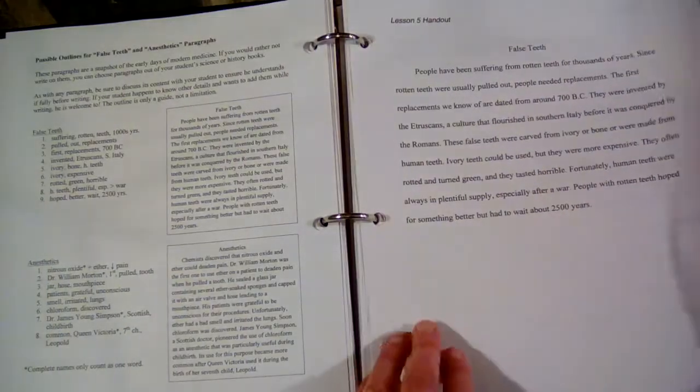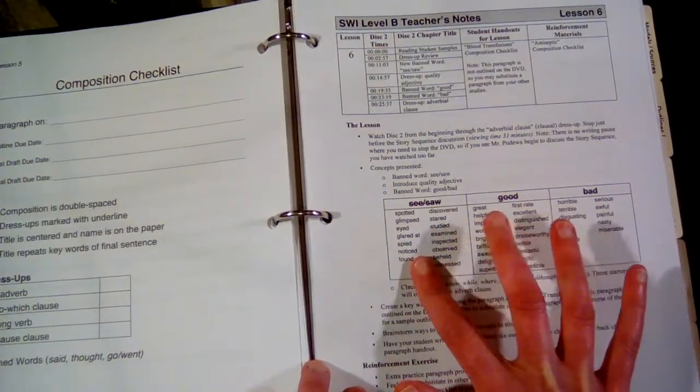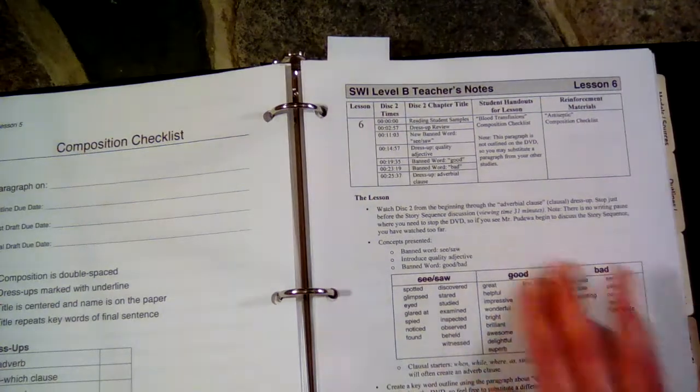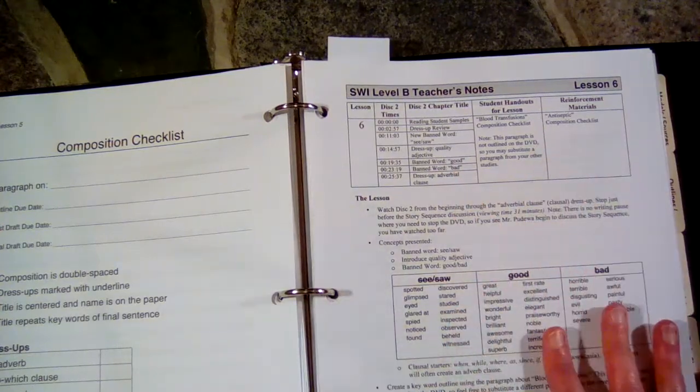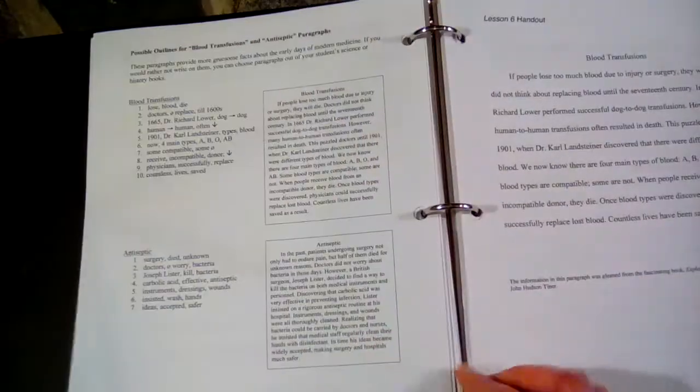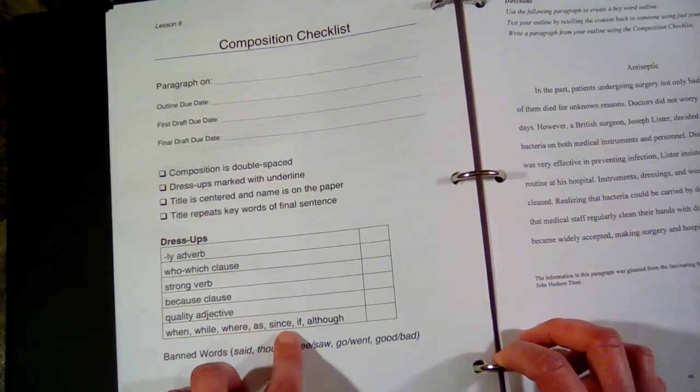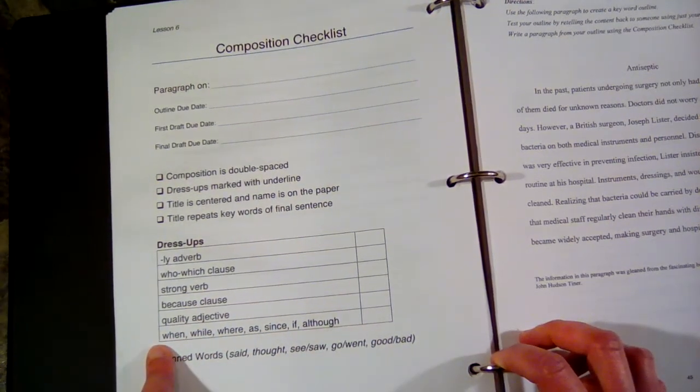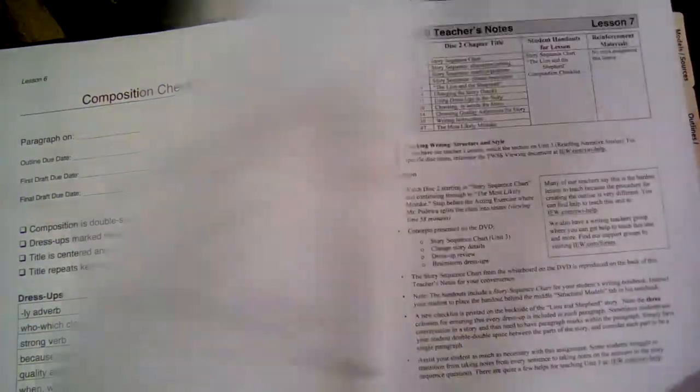The student continues on reinforcing the concepts already learned. Lesson 5 just continues to reinforce the concepts, there's nothing new here. In lesson 6 we have three new banned words: see or saw, good, and bad. These are all banned from here on out in the program. The student is supposed to add a quality adjective somewhere in their paragraph and also an adverbial clause, which is when, while, where, as, since, if, or although. They have to add one of these words somewhere in the paragraph.